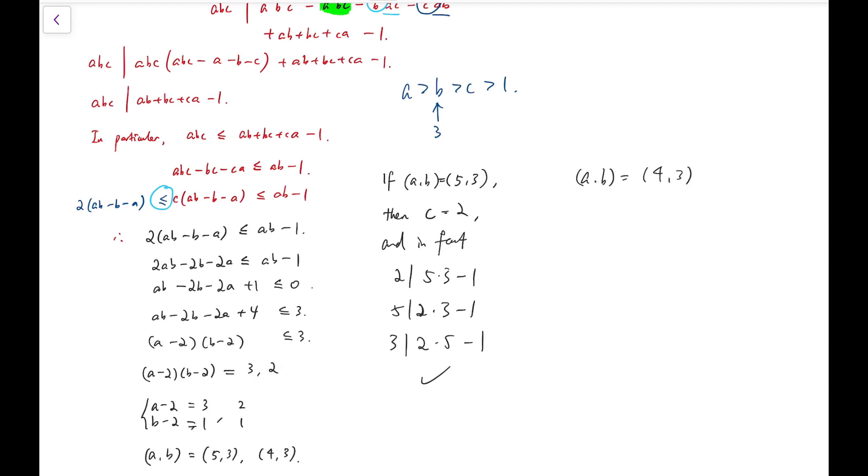And for AB to be four, three, again, C has to be two. But two does not divide four times three minus one. So, therefore, the only ordered pairs are five, three, two, one, one, T where T is a natural number and its permutations.